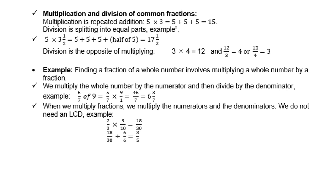For example, five times three and a half is the same as five plus five plus five and plus a half of five, which is seventeen and a half. Division is the opposite of multiplying. Three times four is twelve, and twelve divided by three is four, and twelve divided by four is three.